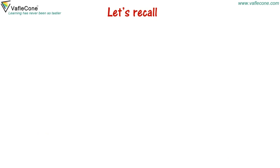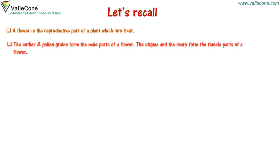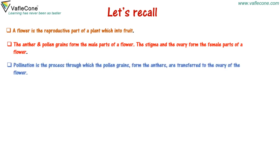Let's recall. A flower is the reproductive part of a plant which turns into fruit. The anther and pollen grains form the male parts of a flower. The stigma and ovary form the female parts of a flower. Pollination is the process through which the pollen grains from the anther are transferred to the ovary of the flower.